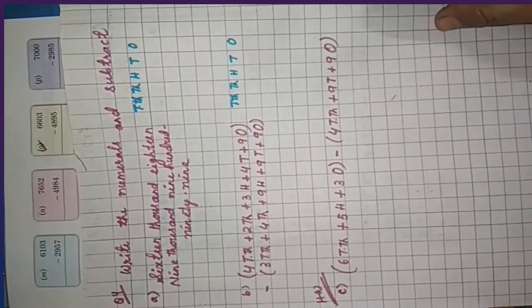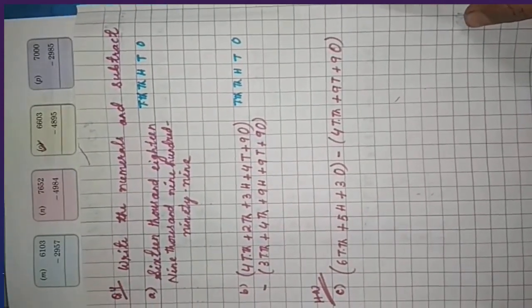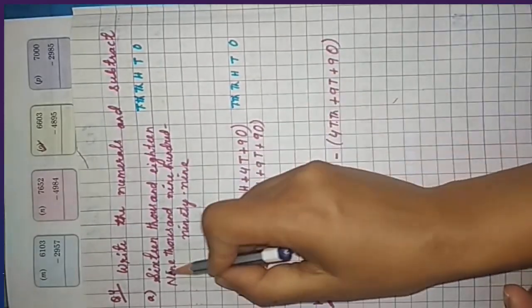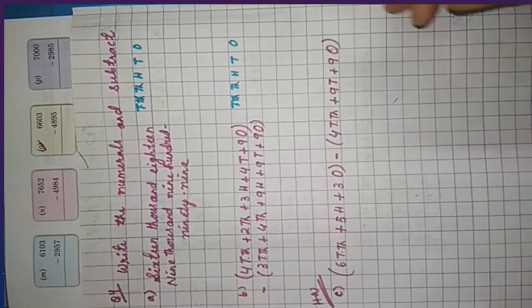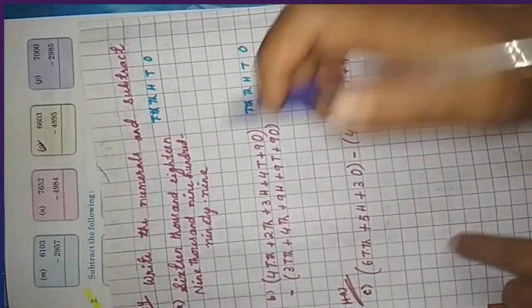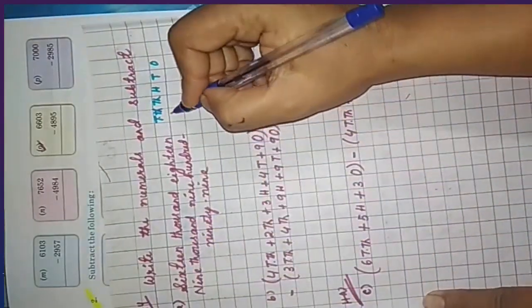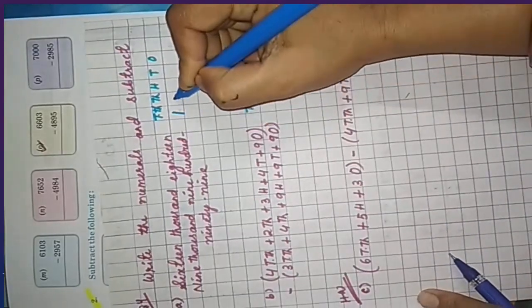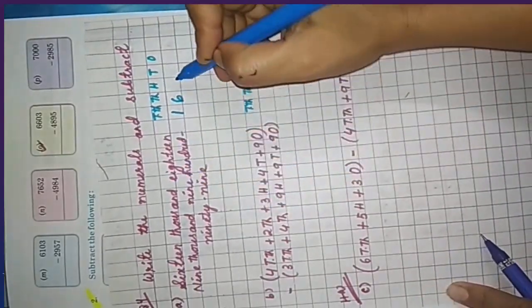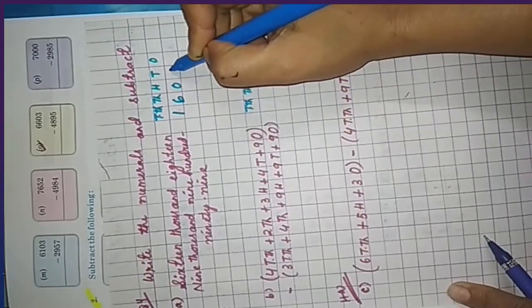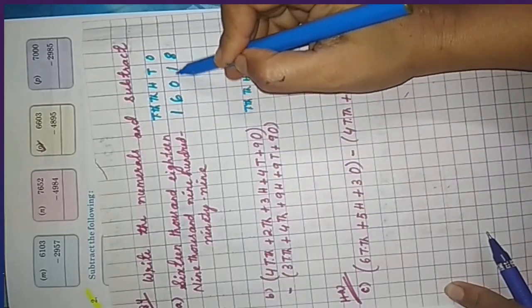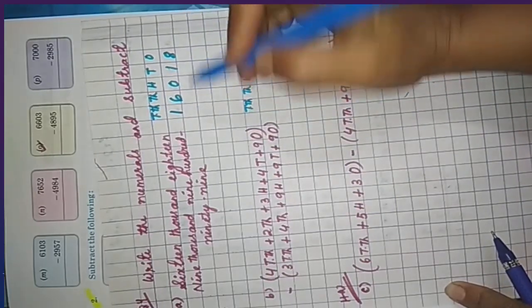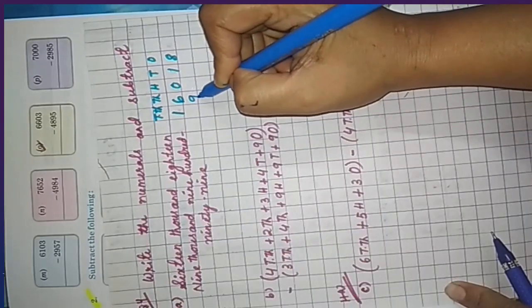For question number 4, write the numeral and subtract. Write 16018 and then 9999. When writing 16018, note that in the hundreds place there is no hundred, so you write 018 — meaning the hundreds digit is zero. 16018 has zero in the hundreds place. Then 9999 is written as nine thousands, nine hundreds, ninety-nine.